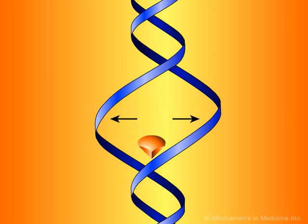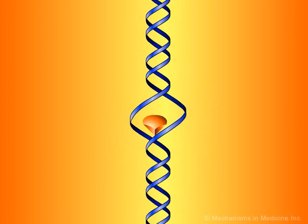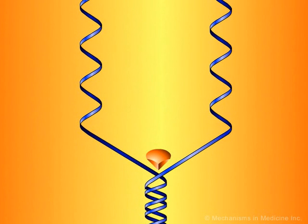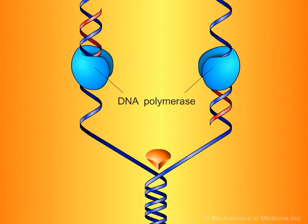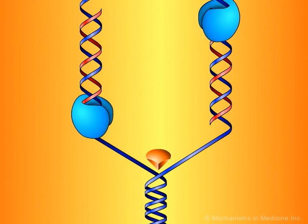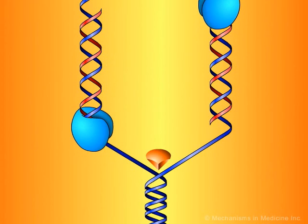The points at which the two strands of DNA separate to allow replication are known as replication forks. The enzyme DNA polymerase then moves along each strand of DNA, behind each replication fork, synthesizing new DNA strands, shown in red, complementary to the original ones.